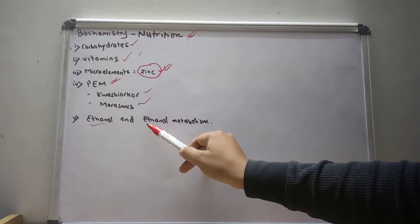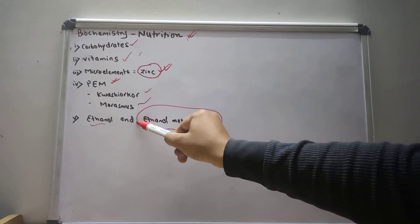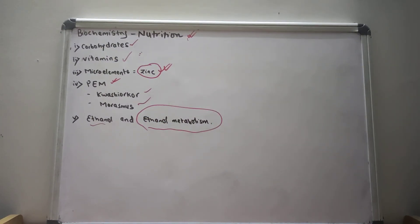And at the last, we will discuss ethanol and ethanol metabolism. So these are the five topics that we are going to discuss in detail in biochemistry nutrition. Thank you.